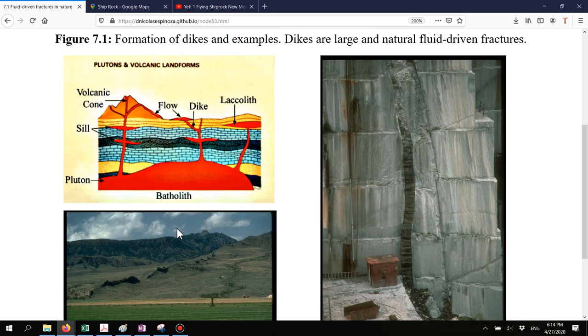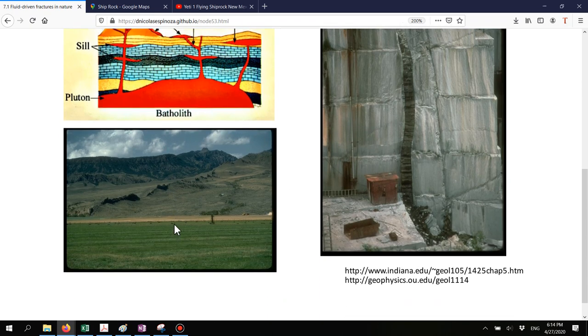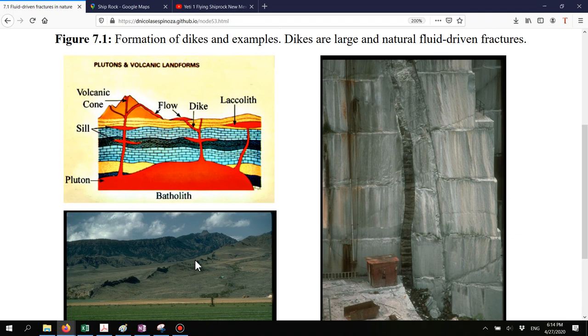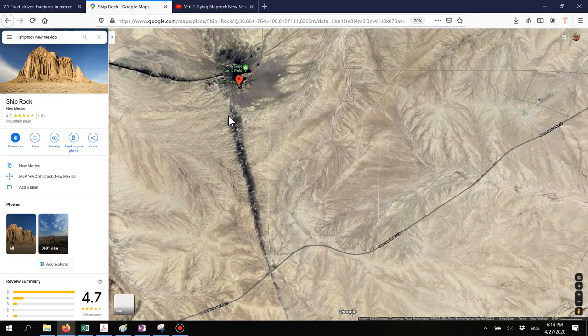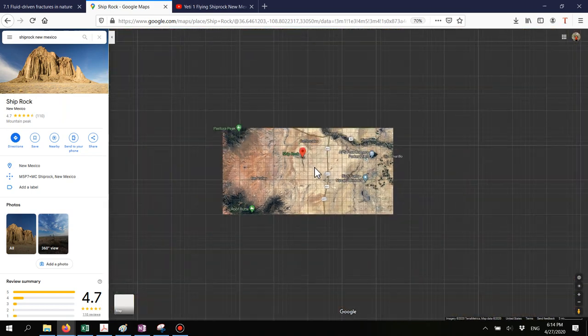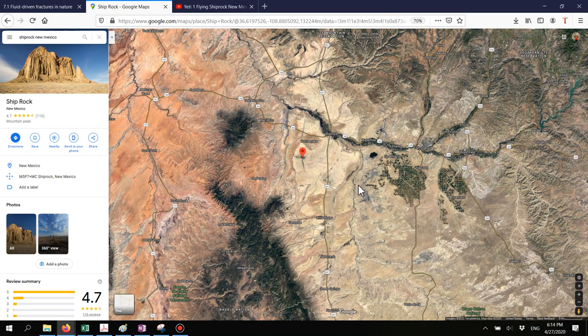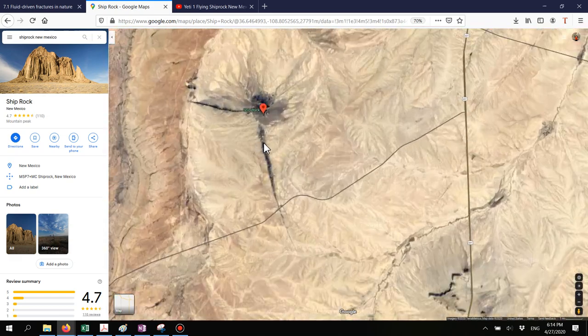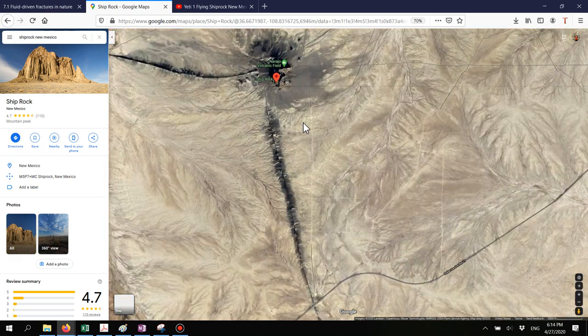Here on the left you have another image of the Ship Rock dike which is in New Mexico. If you ever go to New Mexico and you can pass by this place, I'm going to show you where it is.